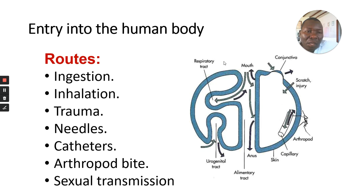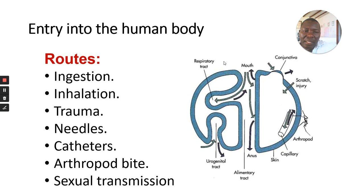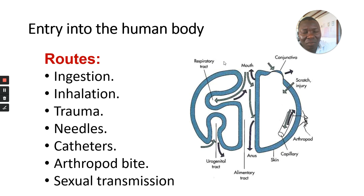Through the mouth, most bacteria cause gastrointestinal infection. The commonest bacteria that cause gastrointestinal infection are many — one is Vibrio cholerae, which causes cholera, and Salmonella typhi, which causes typhoid. There are also other common bacteria transmitted through the mouth causing gastrointestinal problems. One notable bacterium is H. pylori, which does not travel down the intestinal tract but stops at the stomach, with a specific adaptation that enables it to cause gastrointestinal problems.